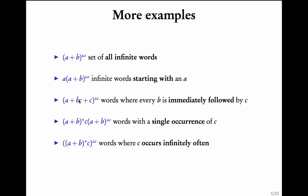What about (a + bc)^ω? This is the set of all words where every b is immediately followed by a c. And (a + b)*c · (a + b)^ω is the set of all words with a single occurrence of c. Finally, (a + b)*c whole^ω is the set of all words where c occurs infinitely often.